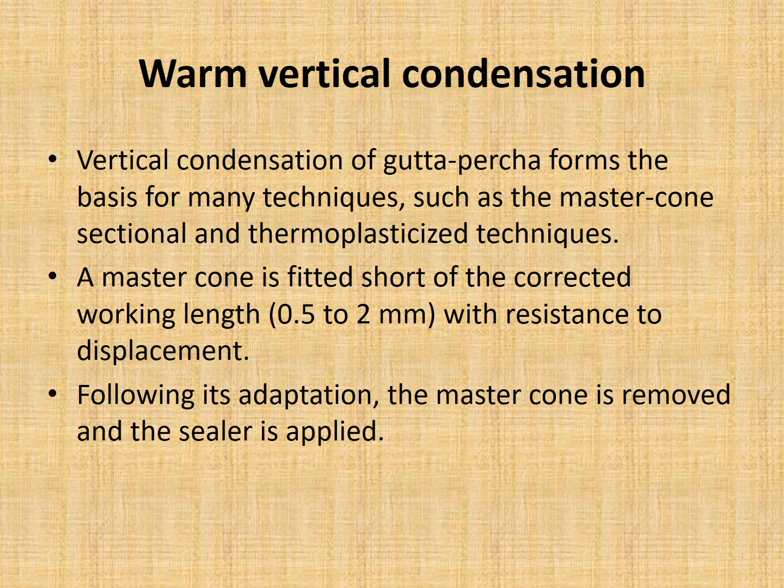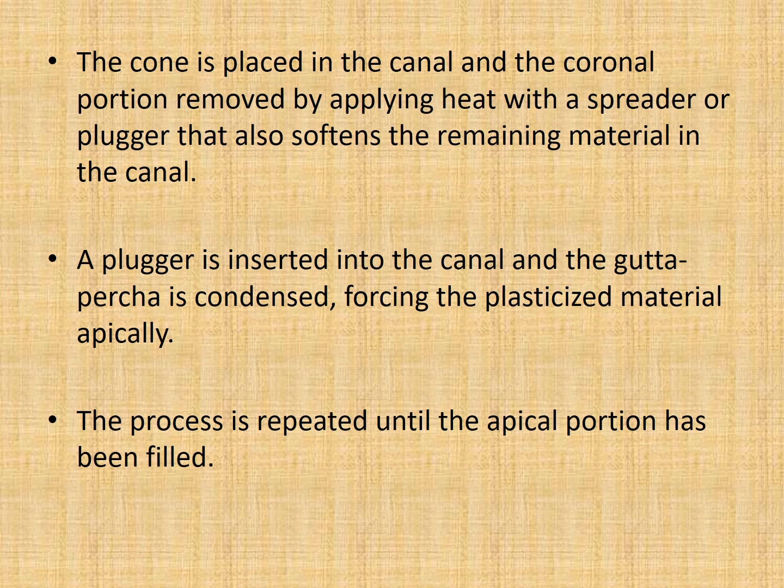Moving to the second technique, warm vertical condensation: vertical condensation of gutta percha forms a basis for many techniques such as master cone, sectional and thermoplasticized techniques. A master cone is fitted short of the corrected working length, usually 0.5-2 mm, with resistance to displacement. The master cone is removed and sealer is applied. The cone is placed in the canal and the coronal portion is removed by applying heat with a spreader or plugger, which also softens the remaining material. A plugger is inserted and gutta percha is condensed firmly, forcing the plasticized material apically.